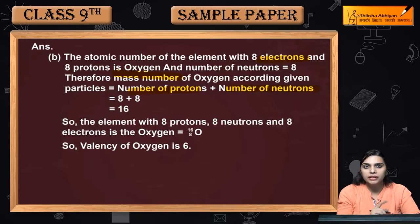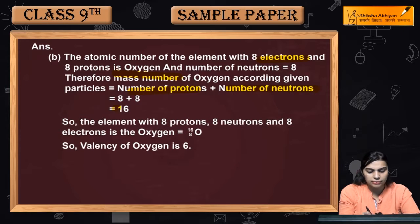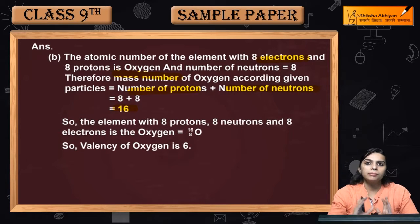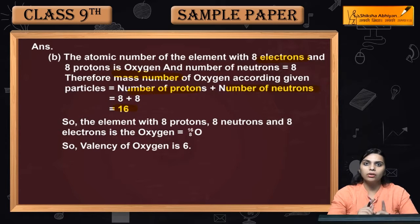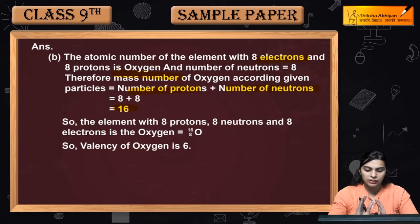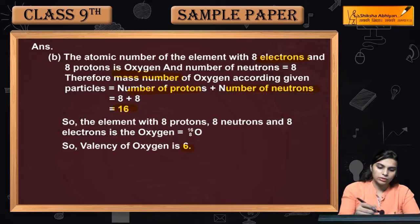Our mass number is 16. In the periodic table, which element has atomic mass 16? It is oxygen. The atomic number of oxygen is 8. So the element we are talking about is oxygen, and its valency is 6.